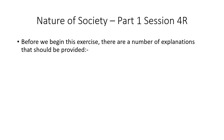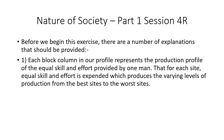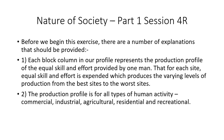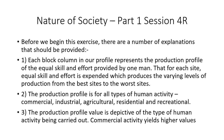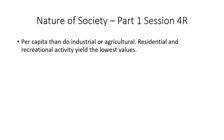Before we begin this exercise, there are a number of explanations that should be provided. First, each block column in our profile represents the production profile of the equal skill and effort provided by one man — that for each site, equal skill and effort is expended, which produces the varying levels of production from the best sites to the worst sites. The production profile is for all types of human activity: commercial, industrial, agricultural, residential, and recreational. Commercial activity yields higher values per capita than the industrial or agricultural. Residential and recreational activity yield the lowest values.